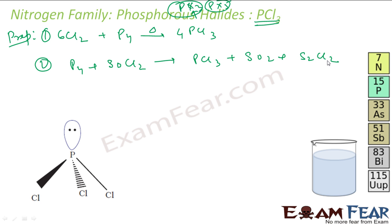You get PCl3 and some sulfur dioxide and S2Cl2. This is the balanced reaction. This is the structure of PCl3. There's a lone pair of electrons on phosphorus and these are three chlorine molecules.